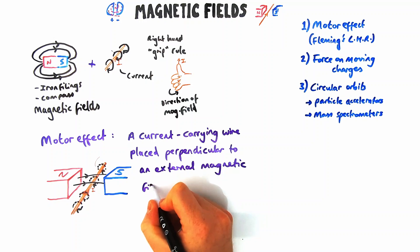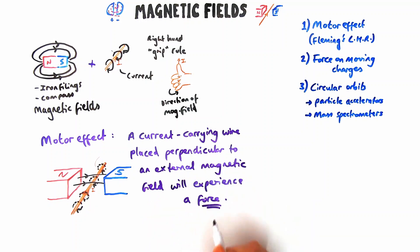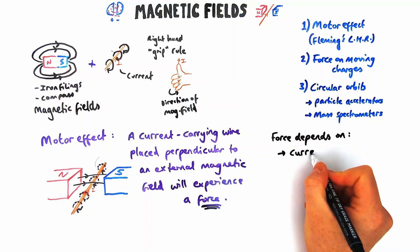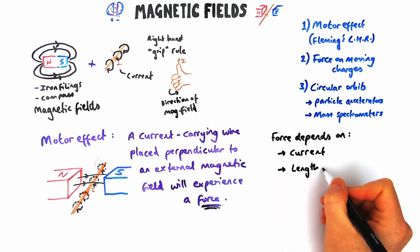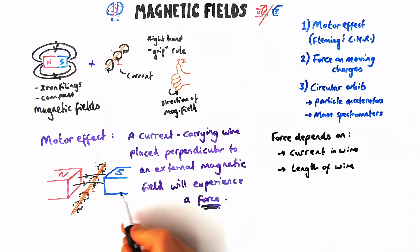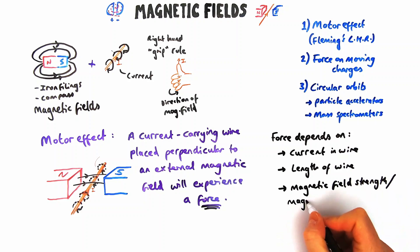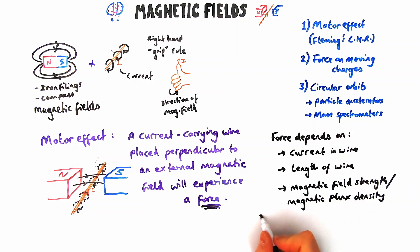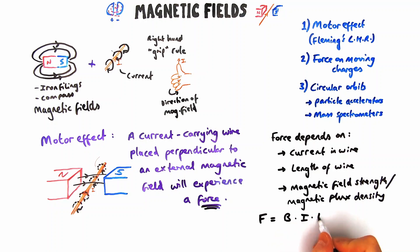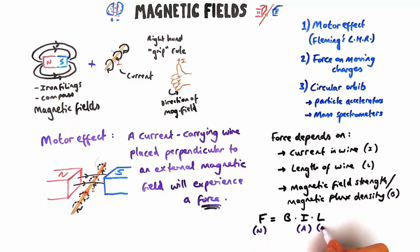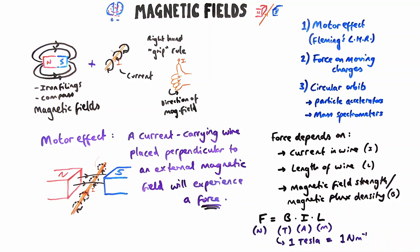That force depends on a couple of factors you may remember from GCSE: the magnitude of the current flowing through the wire, the length of the wire, and the magnetic field strength — which we commonly call magnetic flux density, symbol B. Multiplying these together gives F = BIL. The unit for magnetic flux density is the Tesla, which equals one newton per metre per amp.